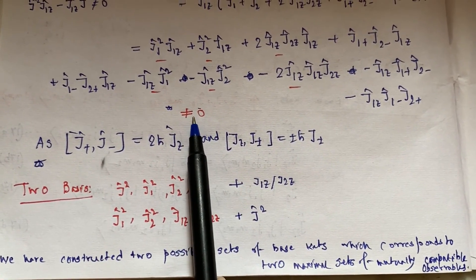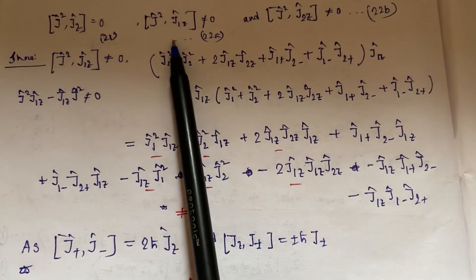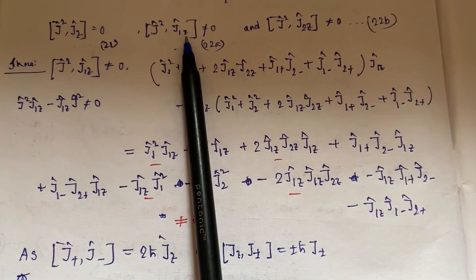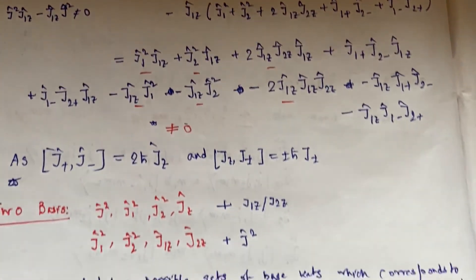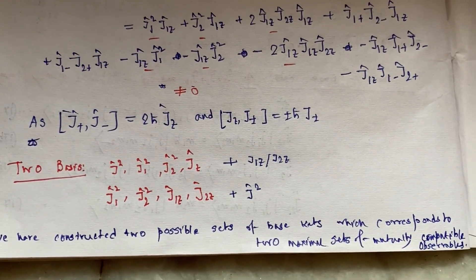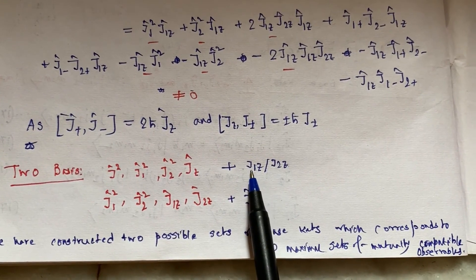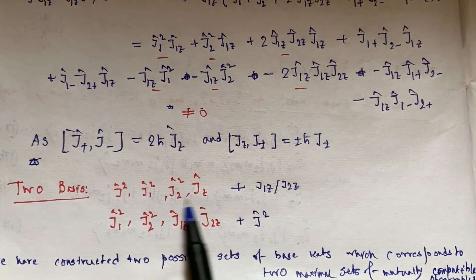As this J² is not commuting with J₁z, this means we cannot add J₁z or J₂z here.